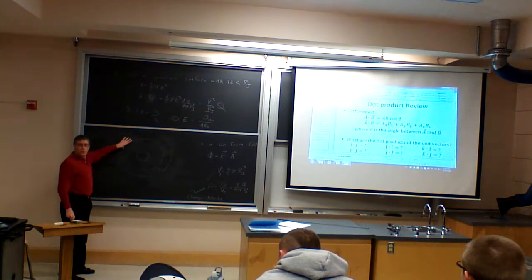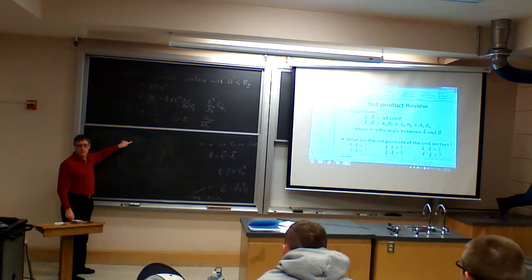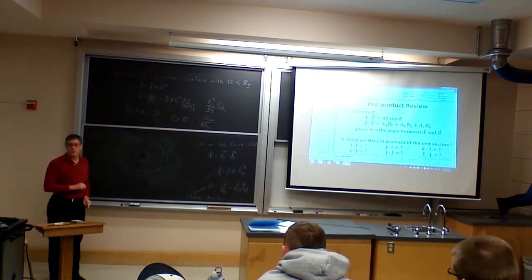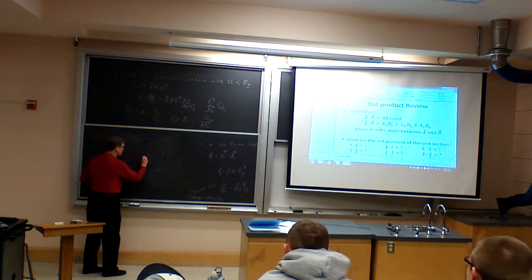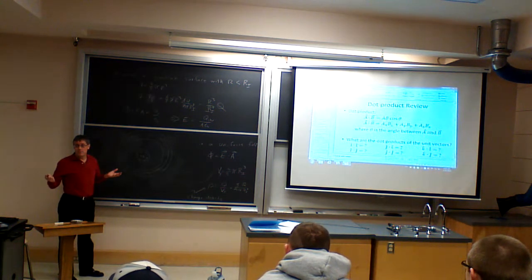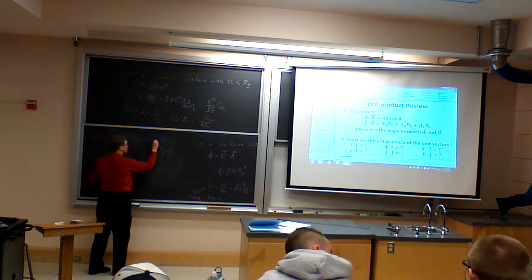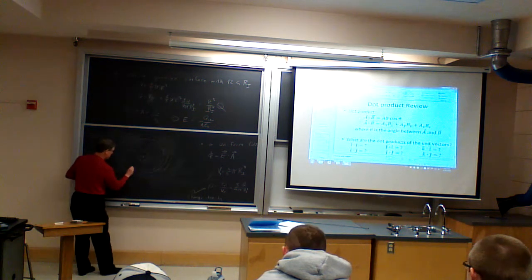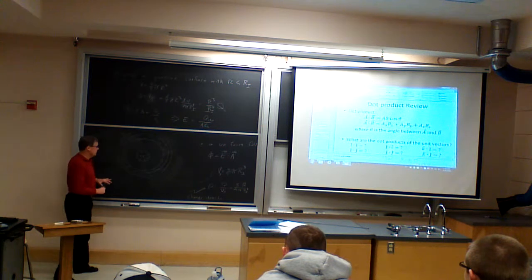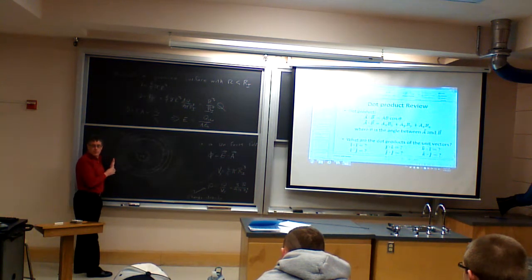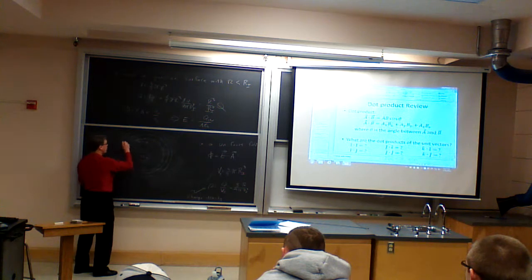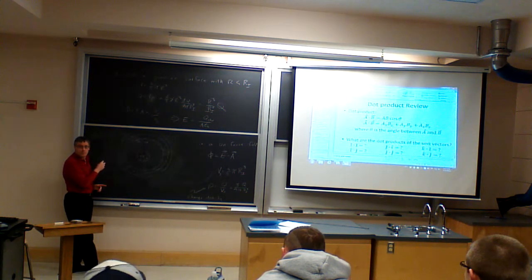Since the outer shell is a conductor, what must the field be inside it? Zero. So if I draw a Gaussian surface inside the conductor material, what must the net charge inside that surface be? Zero. Well, if there's plus Q on the ball on the inside, that means there must be negative Q somewhere — that has to be on the inner surface of this conductor. If this was originally neutral, then the total charge inside that conductor must be zero. If we have negative Q on the inside surface, what must be the charge on the outside surface? Positive Q.